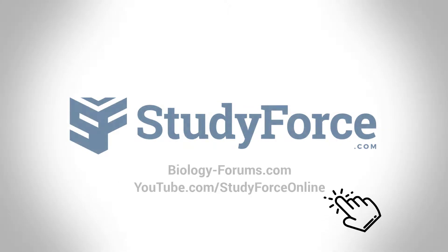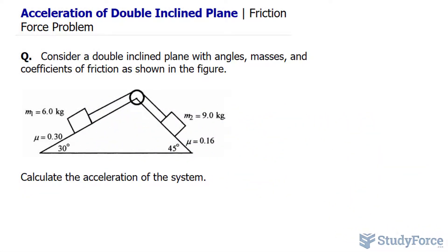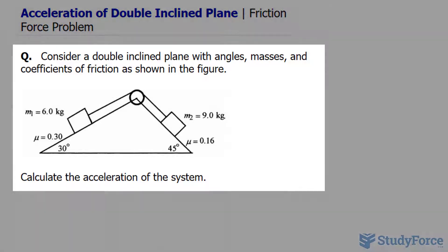In this lesson, we'll look at acceleration of a double inclined plane considering friction. The question reads: consider a double inclined plane with angles, masses, and coefficients of friction as shown in the figure. Calculate the acceleration of the system.